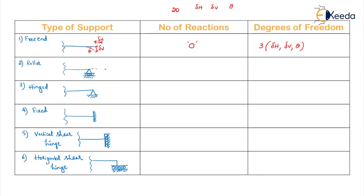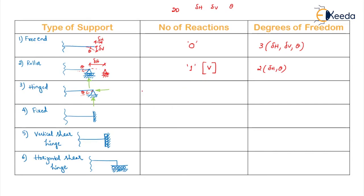A roller can move freely in the horizontal direction and can also rotate, but vertical displacement is restricted. So a roller has one reaction (vertical reaction V) and two degrees of freedom (horizontal displacement and rotation). A hinge has reactions in both horizontal and vertical directions — two reactions, H and V. It is free only to rotate, so it has one degree of freedom: theta.